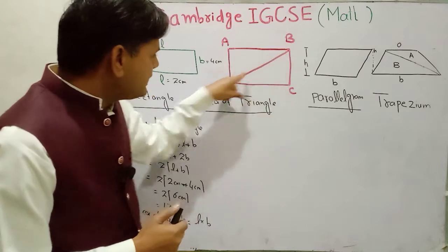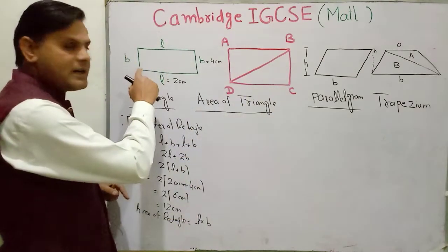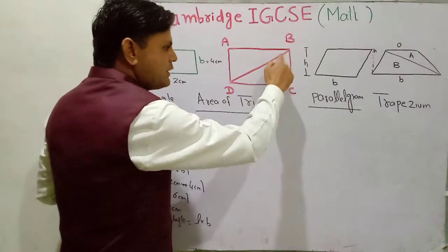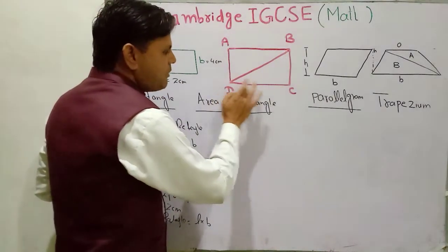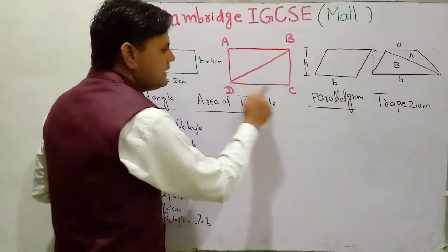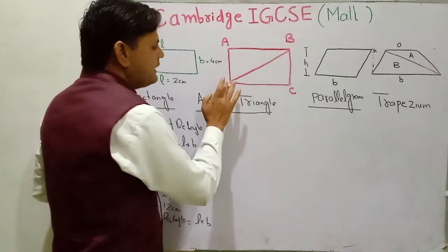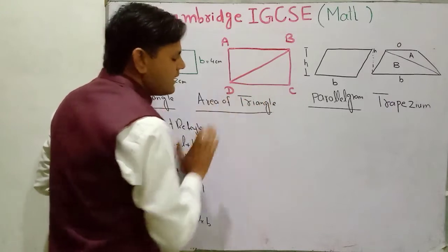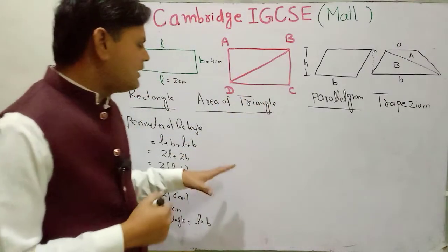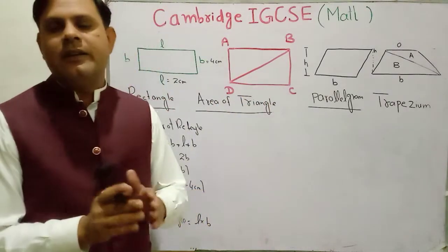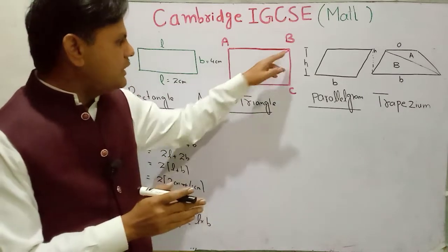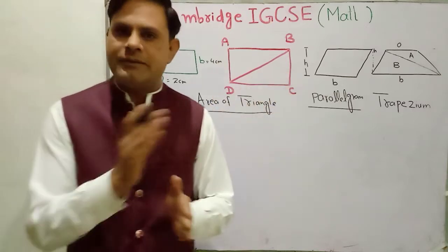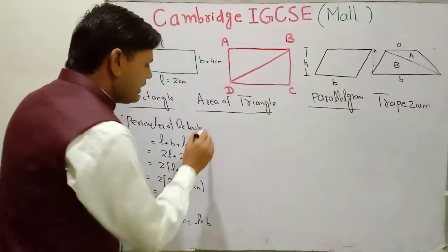If you divide the rectangle into two parts — I divide this rectangle into two parts — then each part is a triangle: triangle DAB and triangle DCB. How do you find the area of a triangle? Basically, if you divide the rectangle into two parts, the area of the triangle is half the area of the rectangle.